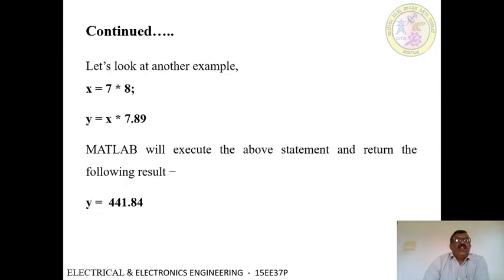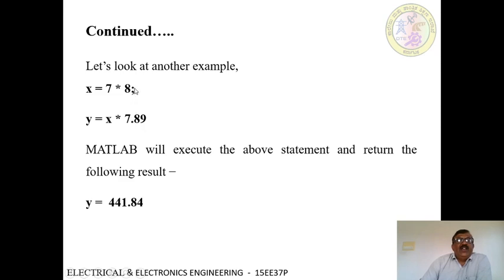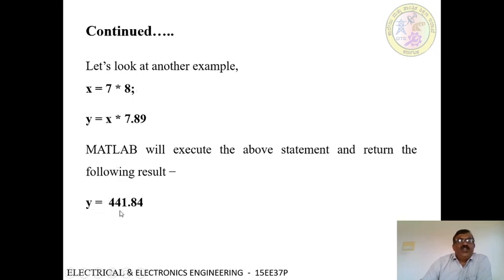Let us look at another example. x equals 7 into 8 — the star symbol is used for multiplication of two numbers. And y equals x into 7.89; here we use a semicolon to terminate this statement, so it will not display an intermediate result. But in this expression, we have not used a semicolon, so you will get the result: y equals 441.84. Here 7.89 is multiplied with x, and x is 7 multiplied by 8, so 56 into 7.89 gives y equals 441.84.